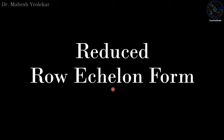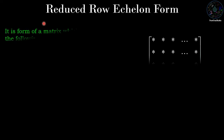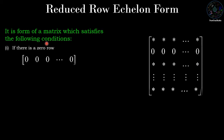Hello friends, in this video we are going to discuss reduced row echelon form. It is a form of matrix which satisfies the following conditions. First condition: if there is a zero row, it should be at the bottom of the matrix.